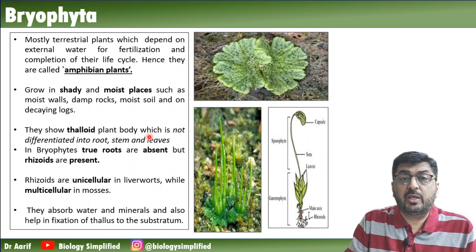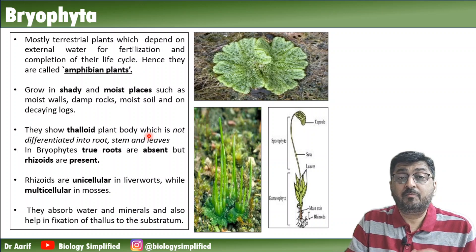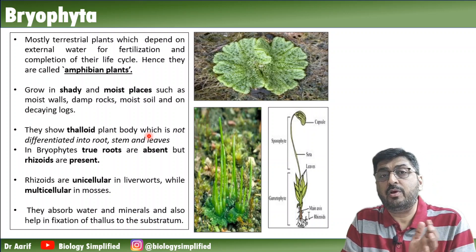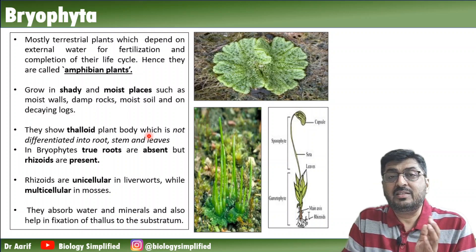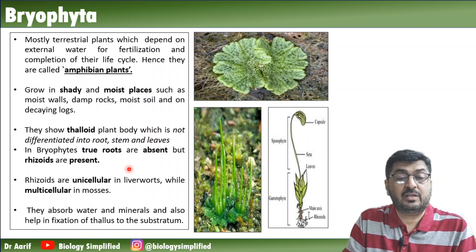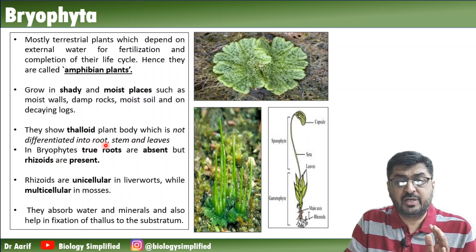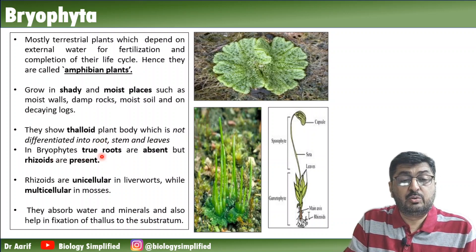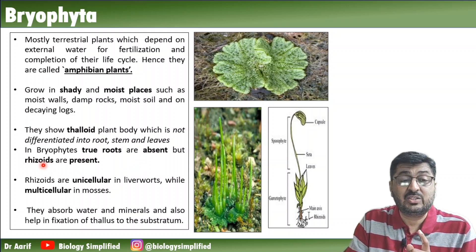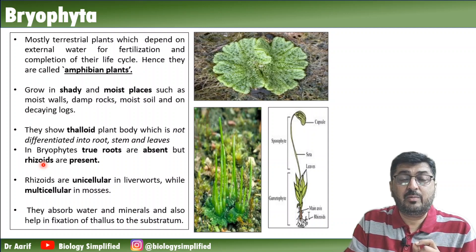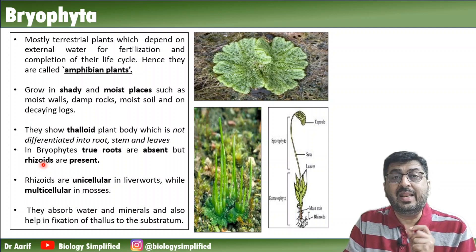Bryophytes show a thaloid plant body. From no root, no stem, no leaf in algae, we will now progress to root-like, stem-like, and leaf-like structures - but not differentiated. It is thaloid, it is not fully differentiated. In bryophytes, true roots are absent but rhizoids are present. Rhizoids means root-like structures.